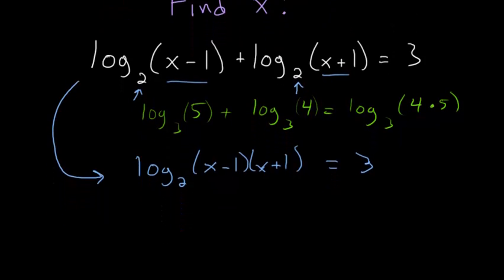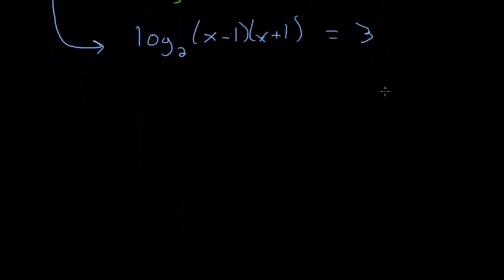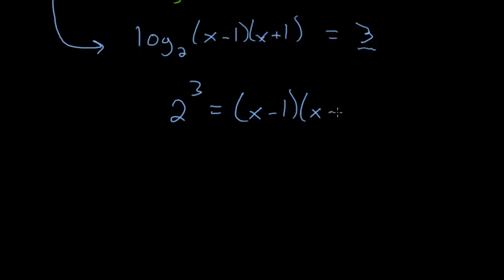Now we can convert this equation into an exponential equation, since what this logarithm means is that 2 raised to the third power is equal to this product, x minus 1 times x plus 1.